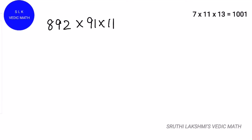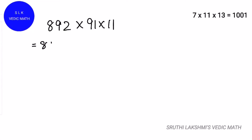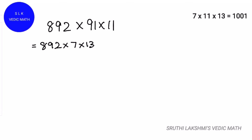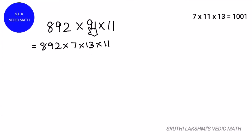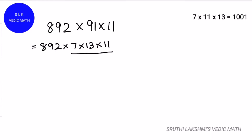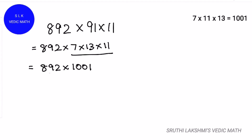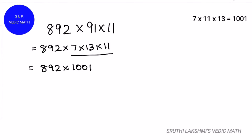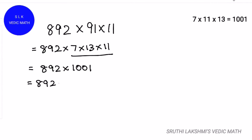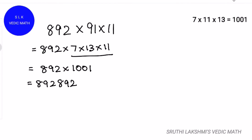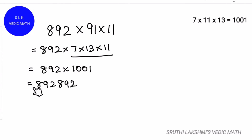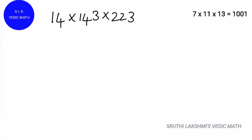Let's see another example: 892 into 91 into 11. This can be rewritten as 892 into 7 into 13 into 11, since 7 into 13 is 91. So 7 into 13 into 11 is 1001, giving us 892 into 1001, which equals 892,892.